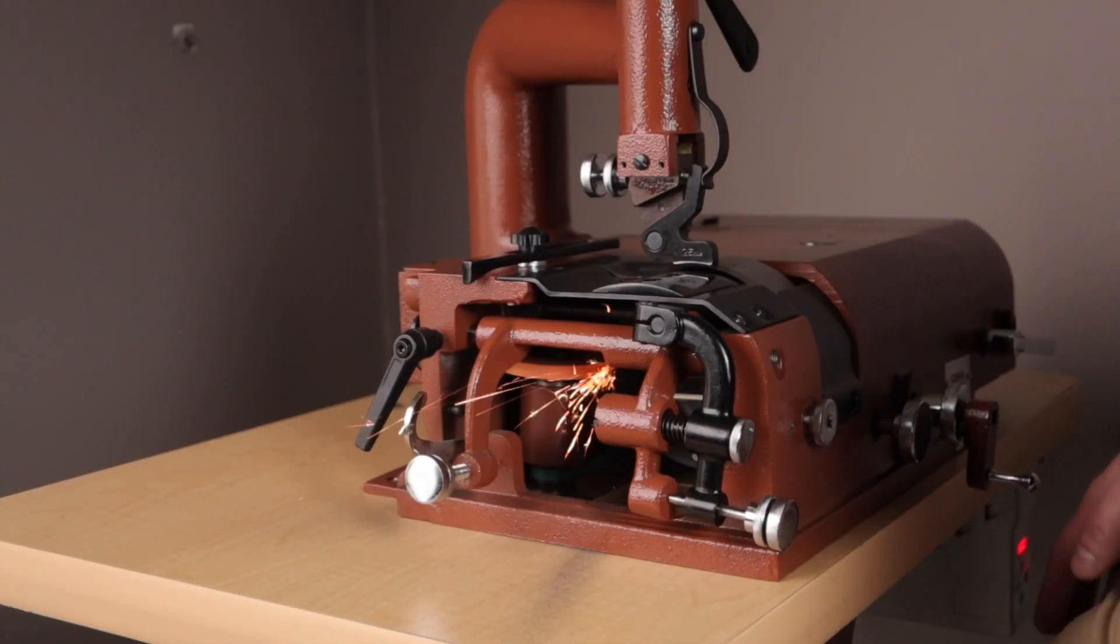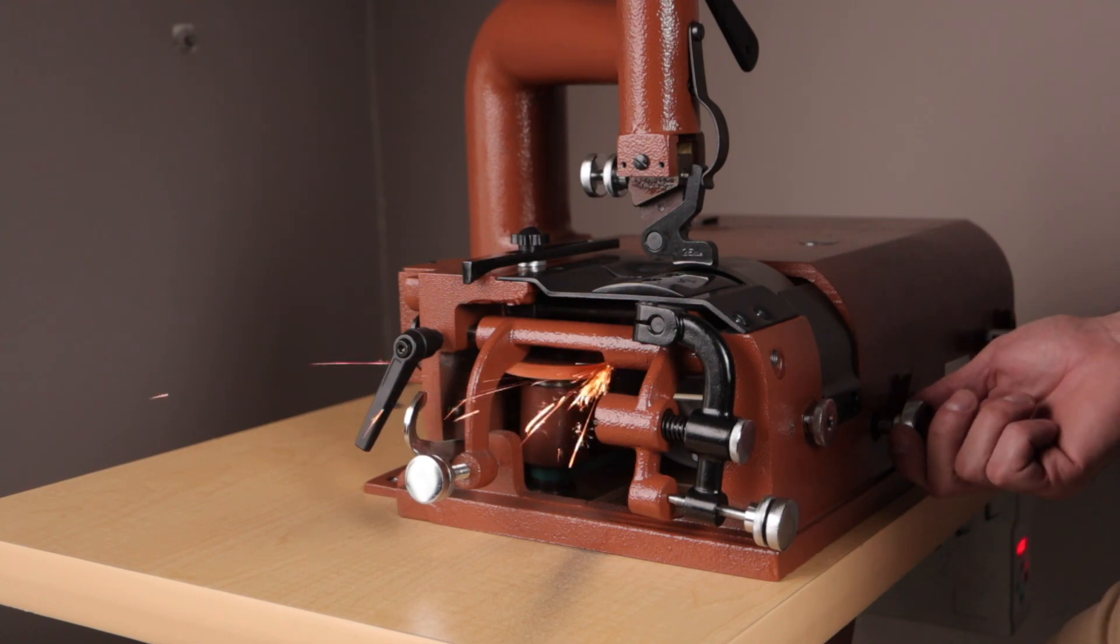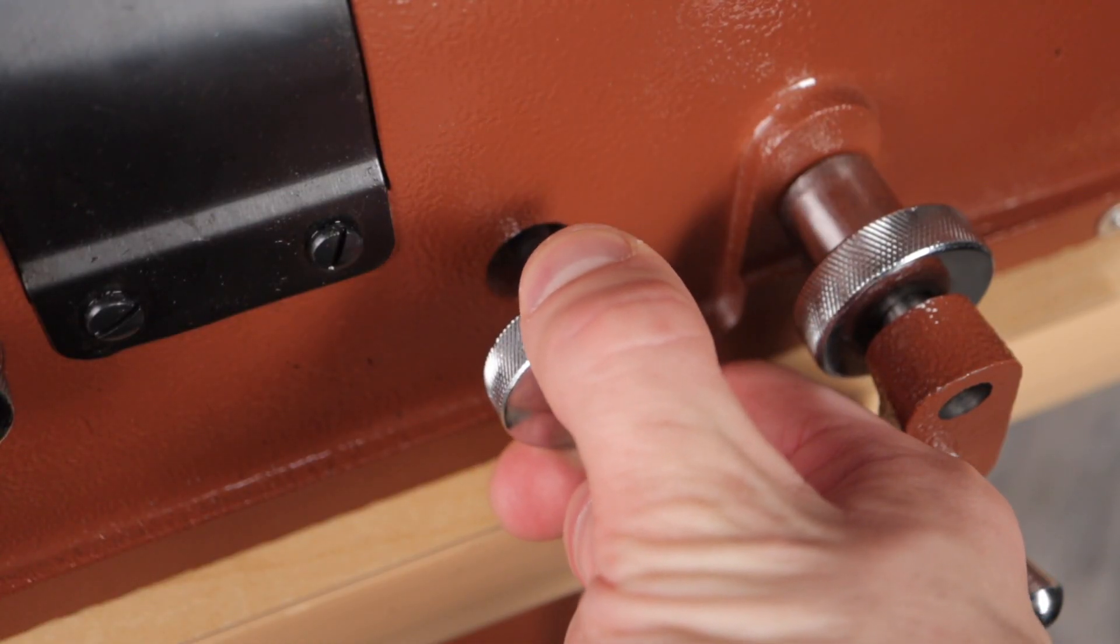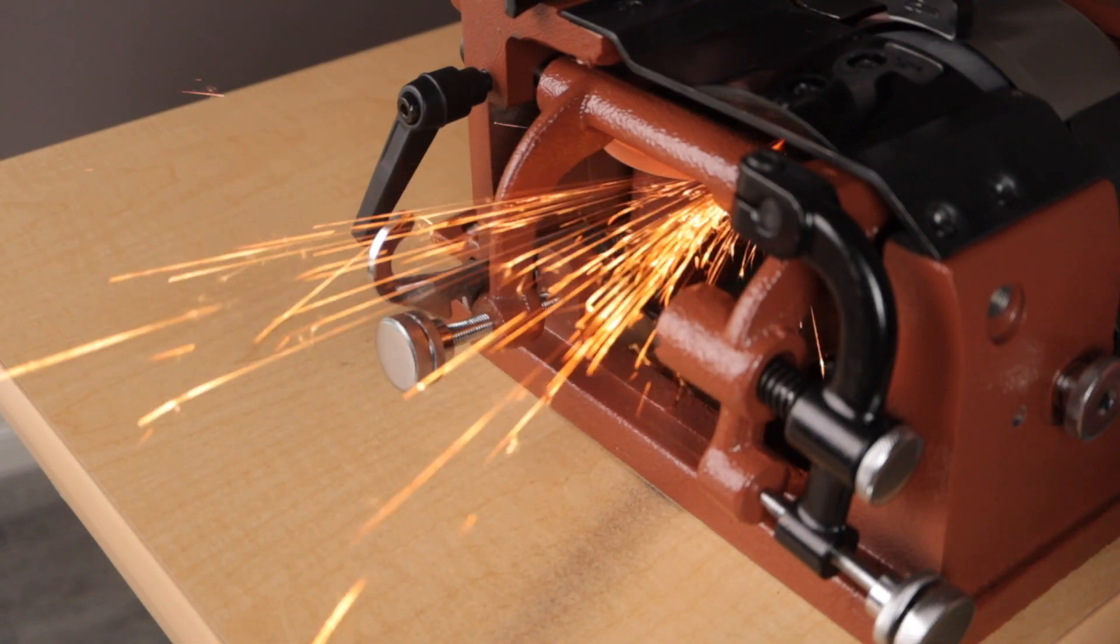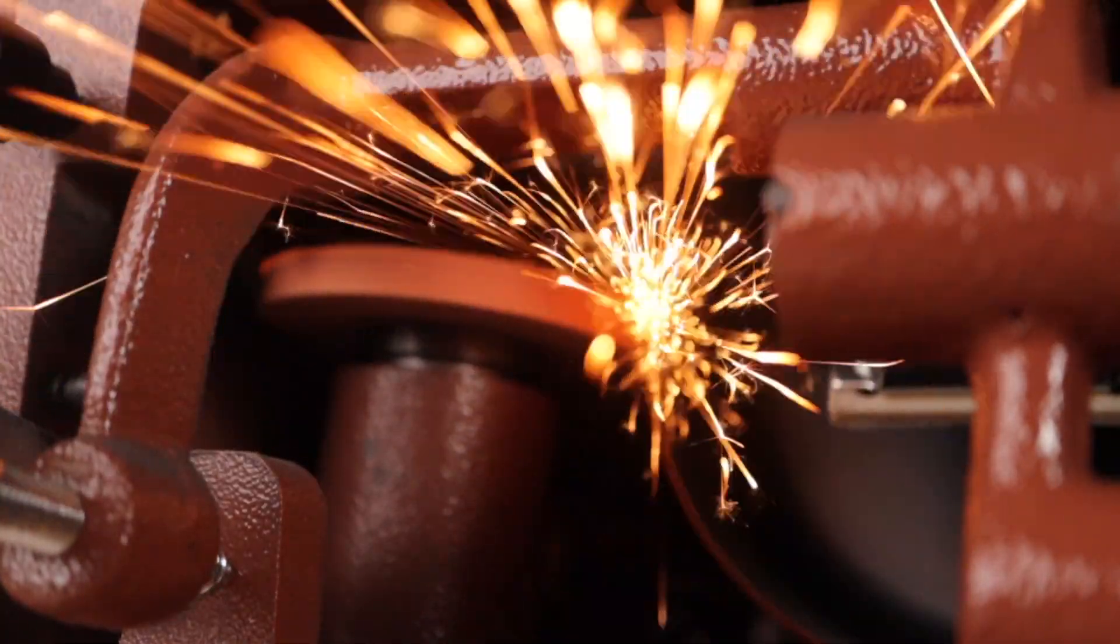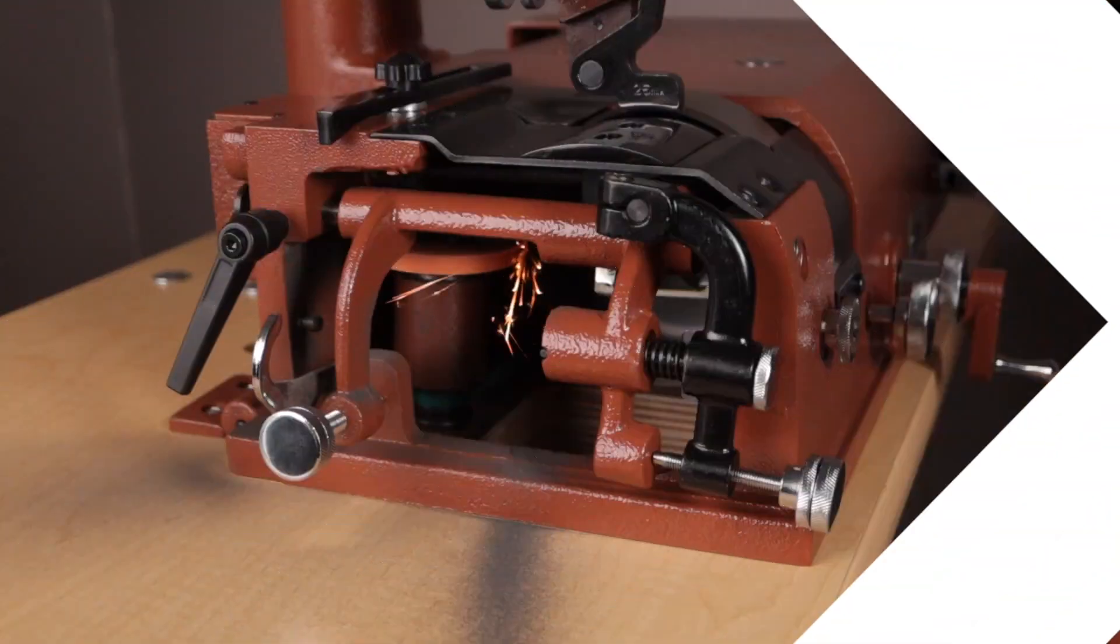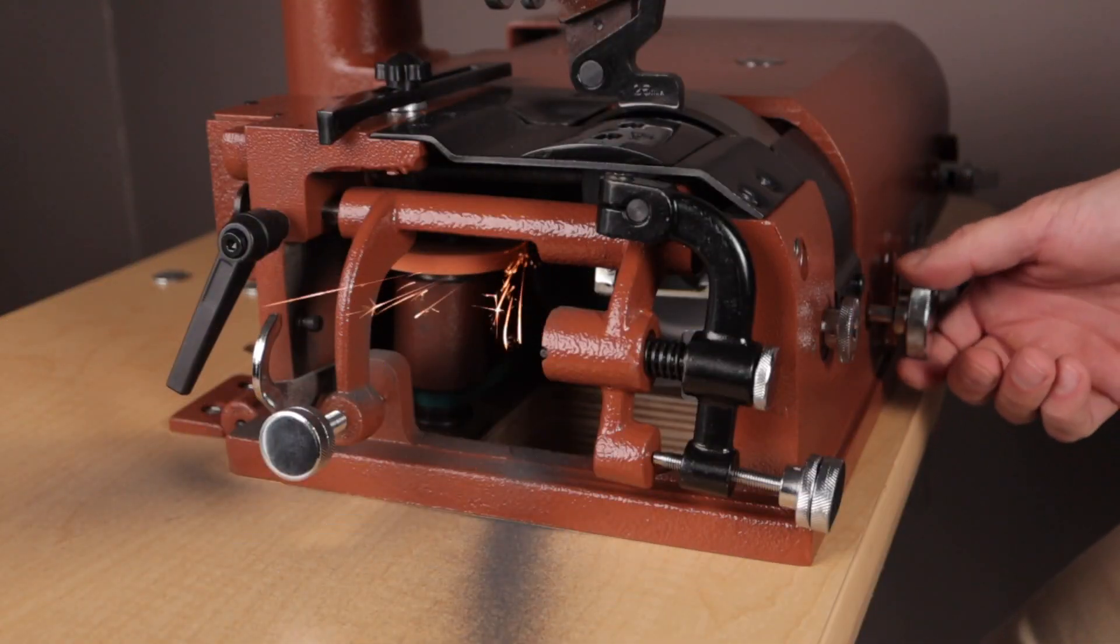You will let this sharpening stone grind away on the blade until the sparks are reduced, and then you will engage the stone again towards the blade by turning the knob to repeat this process. Once the sparks have reduced for the second time, move the sharpening stone away from the blade.